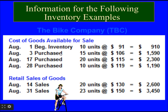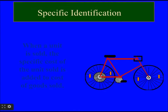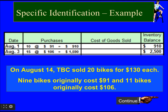Here is an example of inventory purchased: on August 1, 10 units were purchased at $91 each, and on August 3, 15 units were purchased at $106 each. For the specific identification method, when a unit is sold the specific cost of that particular unit sold is added to the cost of goods sold. So on August 1, 10 units at $91 gives a certain total value, and for 15 units on August 3 the total was calculated, giving an inventory balance of $2,500.